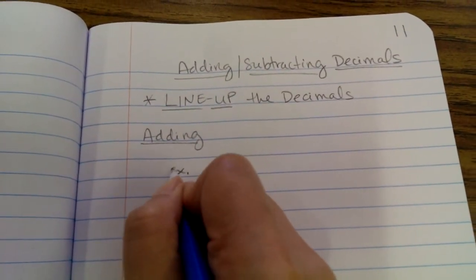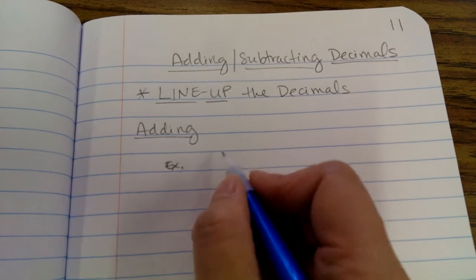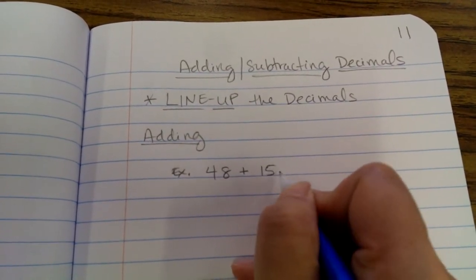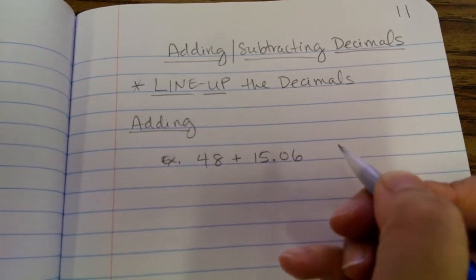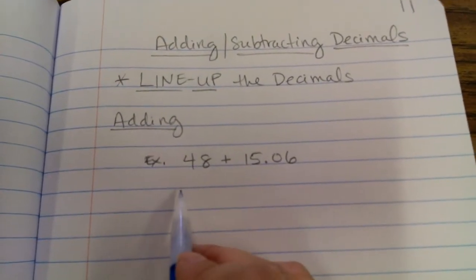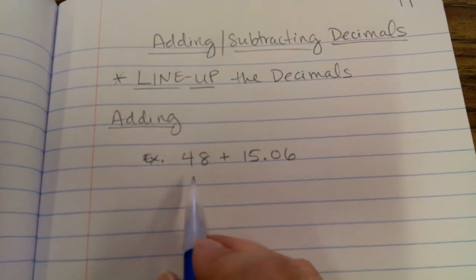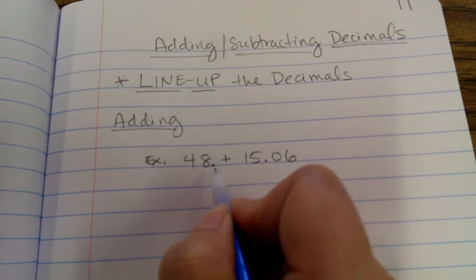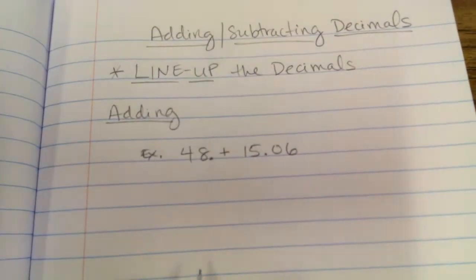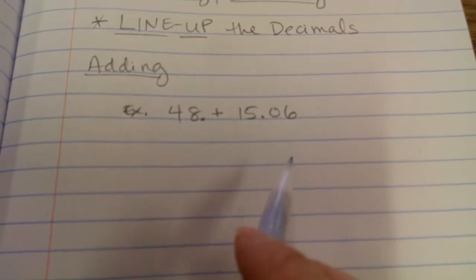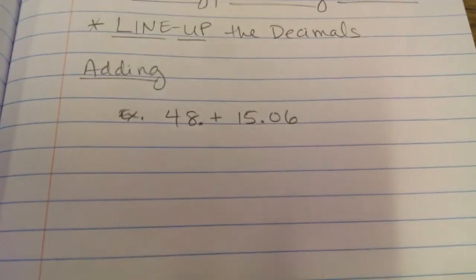The first example we're going to do is we're going to add 48 plus 15 and 6 hundredths. Now you might say, well, there's no decimal in this number. But remember, when you don't see the decimal, where is it? It's invisible. It's behind the number. Because if we put it here, it's still 48. It doesn't change the value, right?